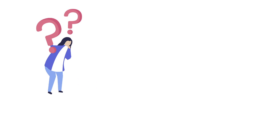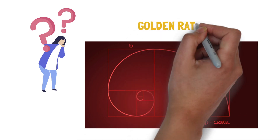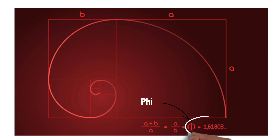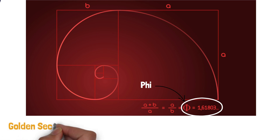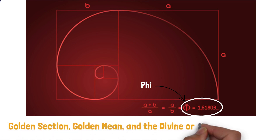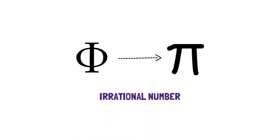The simple answer behind all these questions is the golden ratio. The golden ratio is a special ratio, also known as phi, that approximately equals 1.618. It is also known as the golden section, golden mean, and the divine proportion. Phi is like pi in the sense that it is an irrational number.